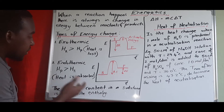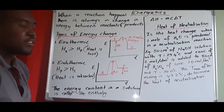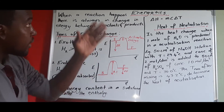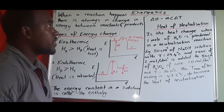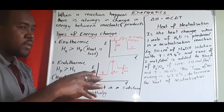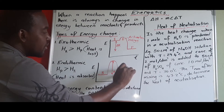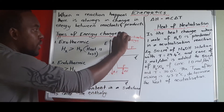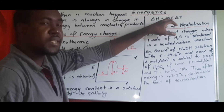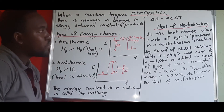The energy content in any substance is known as enthalpy — a term you need to be familiar with in energetics in chemistry. Because we cannot measure the absolute enthalpy of a specific compound, we instead find the enthalpy change, which is delta H. This is calculated using the equation: mass times specific heat capacity times the change in temperature (Q = mcΔT).